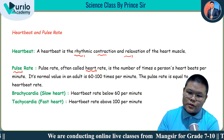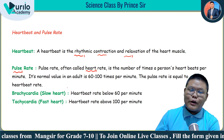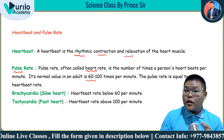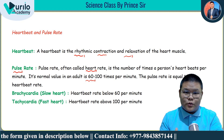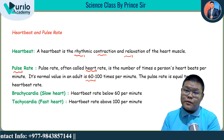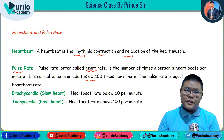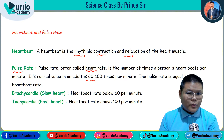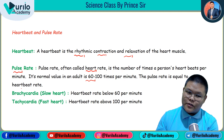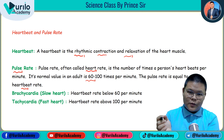Pulse rate — normal pulse rate is around 72 times per minute. Pulse rate is equal to heartbeat rate. If the pulse rate is high — above 100 per minute — that condition is called tachycardia.